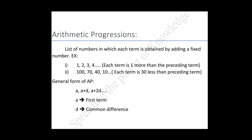For example: 1, 2, 3, 4, etc. Here each term is one more than the term preceding it. Second example: 170, 40, 10, etc. Here each term is 30 less than the term preceding it.